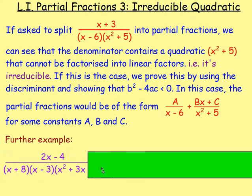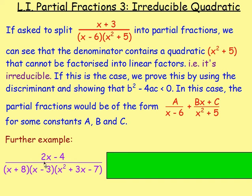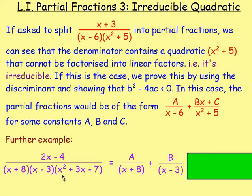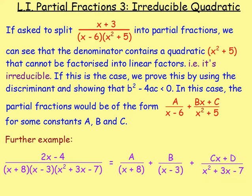A further example: if we were asked to express (2x − 4) over (x + 8)(x − 3)(x² + 3x − 7) in partial fractions, first of all we would check that the quadratic part is irreducible. And then we would write that as: A over (x + 8), which is a linear factor; B over (x − 3), again a linear factor; and because this part is an irreducible quadratic, we write that as (Cx + D) over (x² + 3x − 7).